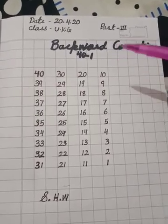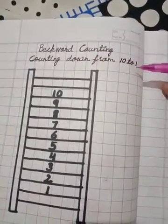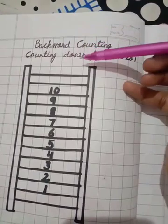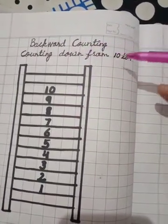What is backward counting? For example, counting down from 10 to 1. Counting down means, neeche se. From 10 to 1.